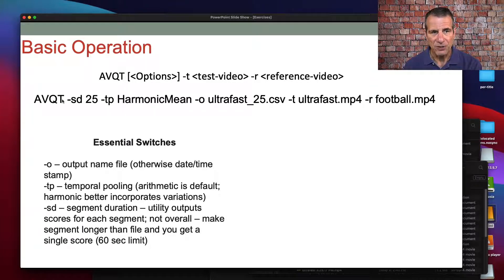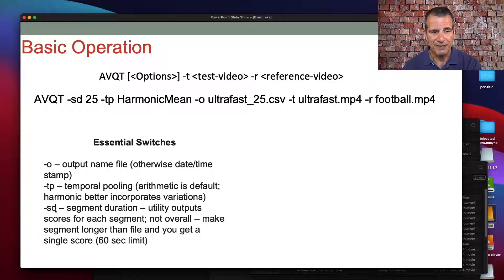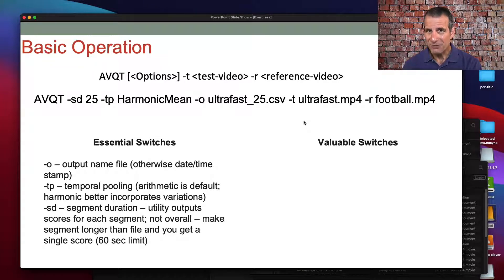Here's the command line I would use to run the Advanced Video Quality Tool for the test files. I'm calling the tool, setting the duration at 25, using harmonic mean instead of arithmetic mean, naming the output file the same name as the compressed file I'm analyzing, and using 25 to designate a segment duration of 25. This is the encoded file, and this is the source file. Pretty simple to use.